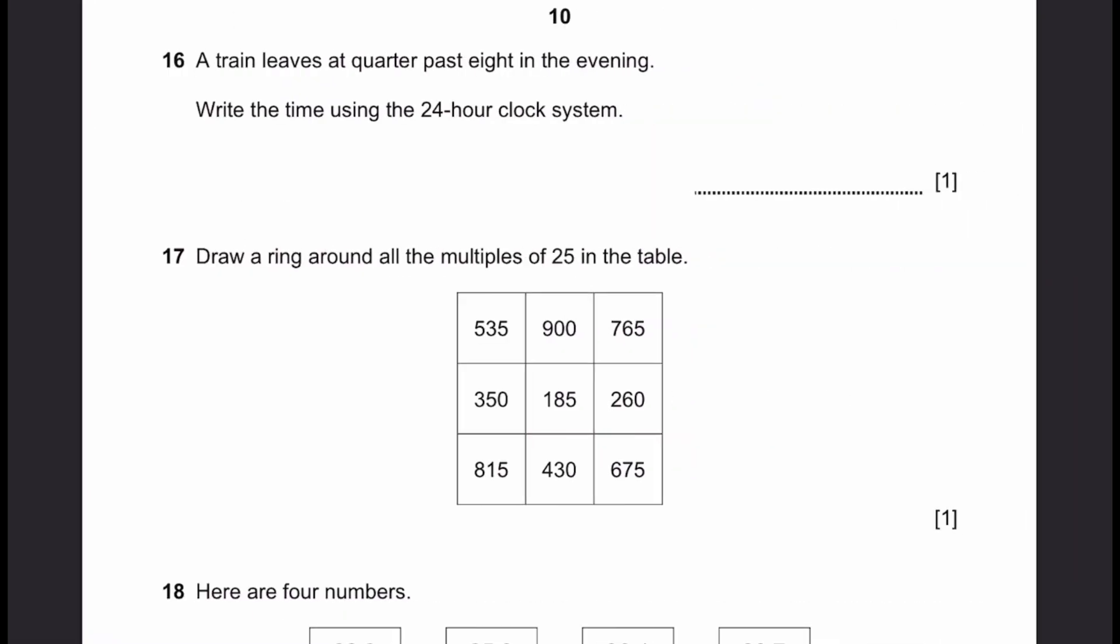Question 16. A train leaves at quarter past 8 in the evening. That's 8.15 pm. Right? Quarter, 15 minutes past 8 in the evening. So pm. Write the time using 24 hour clock system. 8.15 pm is 20.15 hours in 24 hours. That's the answer.